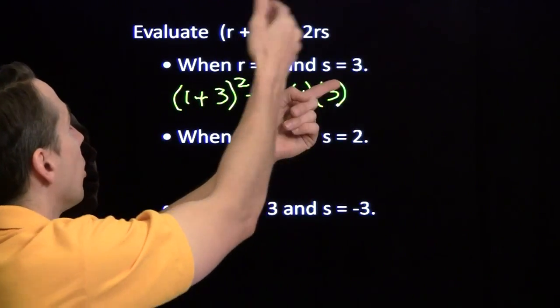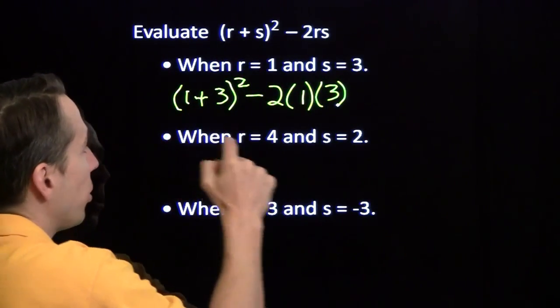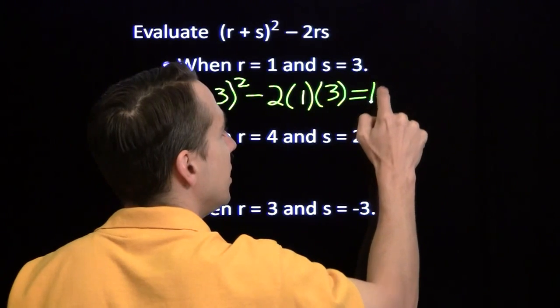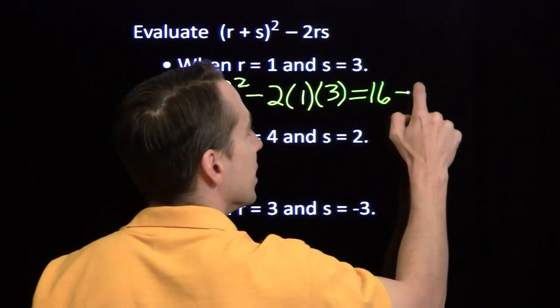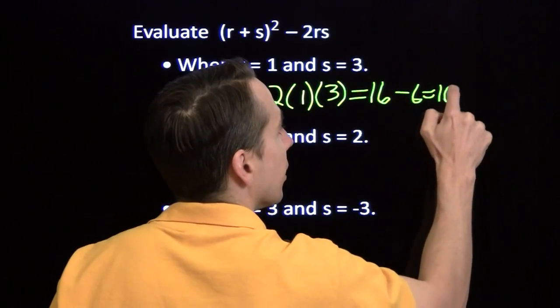There it is with all the substitution. Put 1s in for R. 3s in for the Ss. 1 plus 3 is 4. 4 squared is 16. 2 times 1 times 1 times 3 is 6. That is 10.